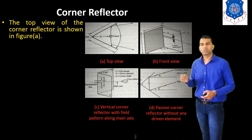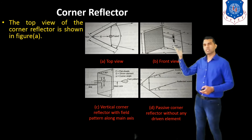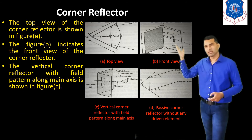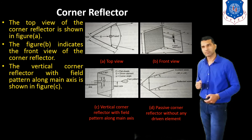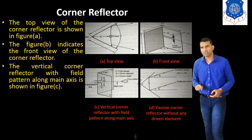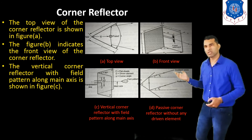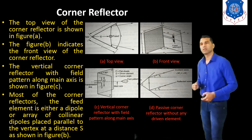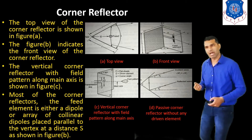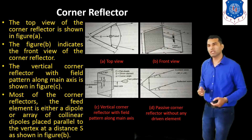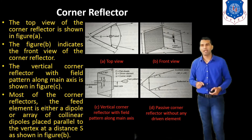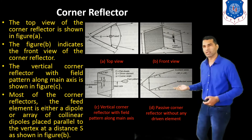The top view of the corner reflector is shown in figure A. Figure B indicates the front view of the corner reflector. The vertical corner reflector with twin elements along the main axis is shown in figure C. For most corner reflectors, the driven element is either a dipole or an array of collinear dipoles, placed parallel to the vertex at a distance as shown in figure B.